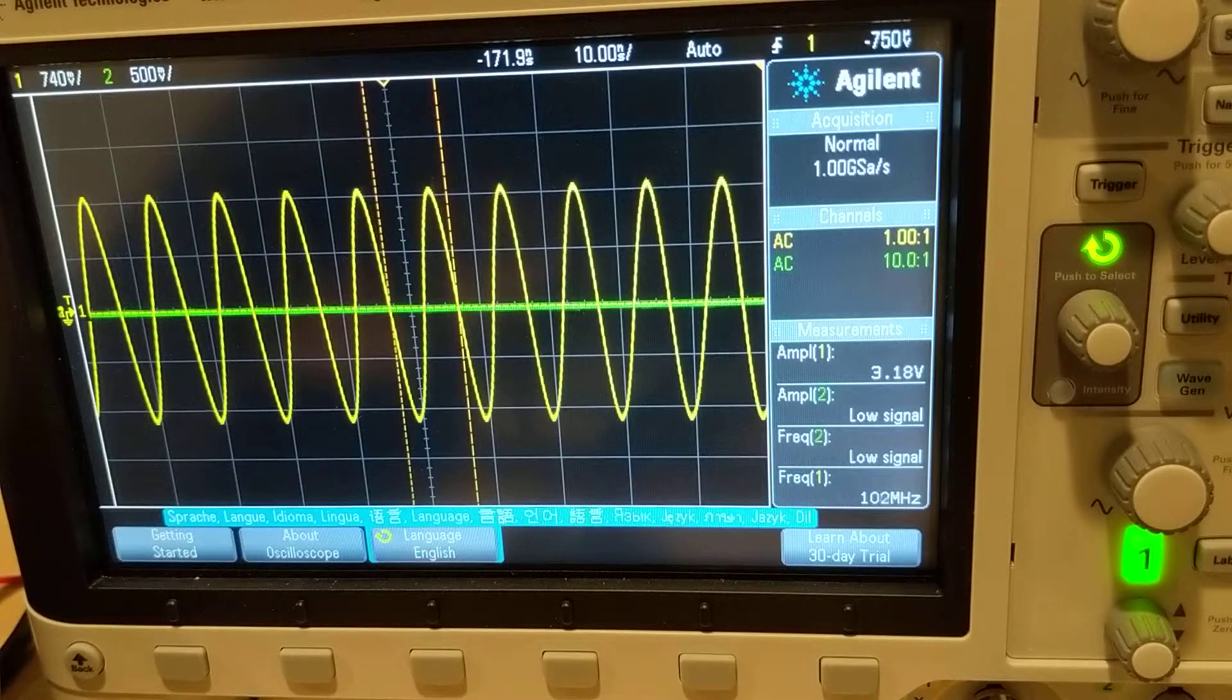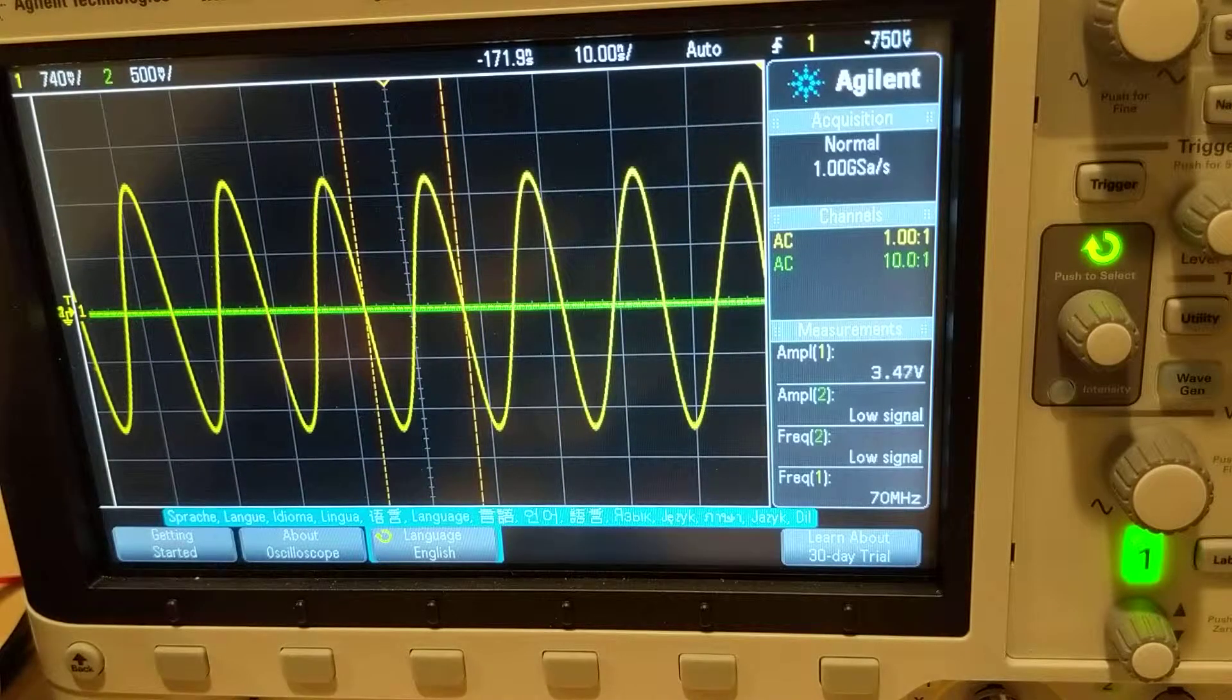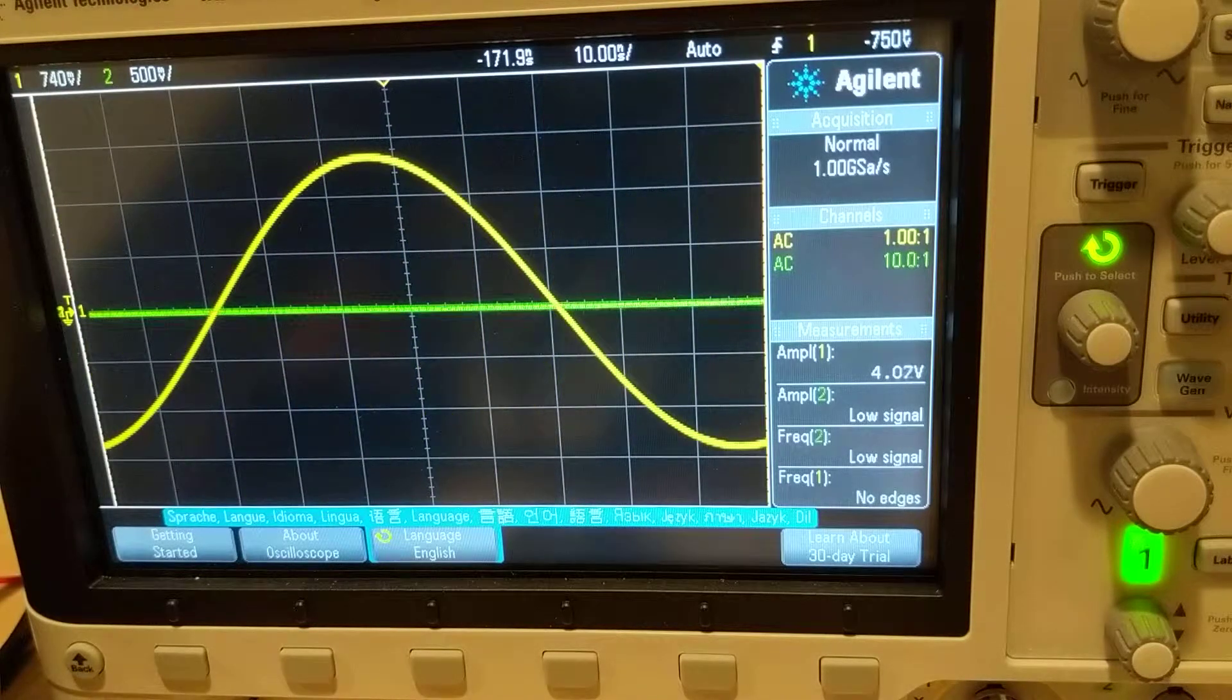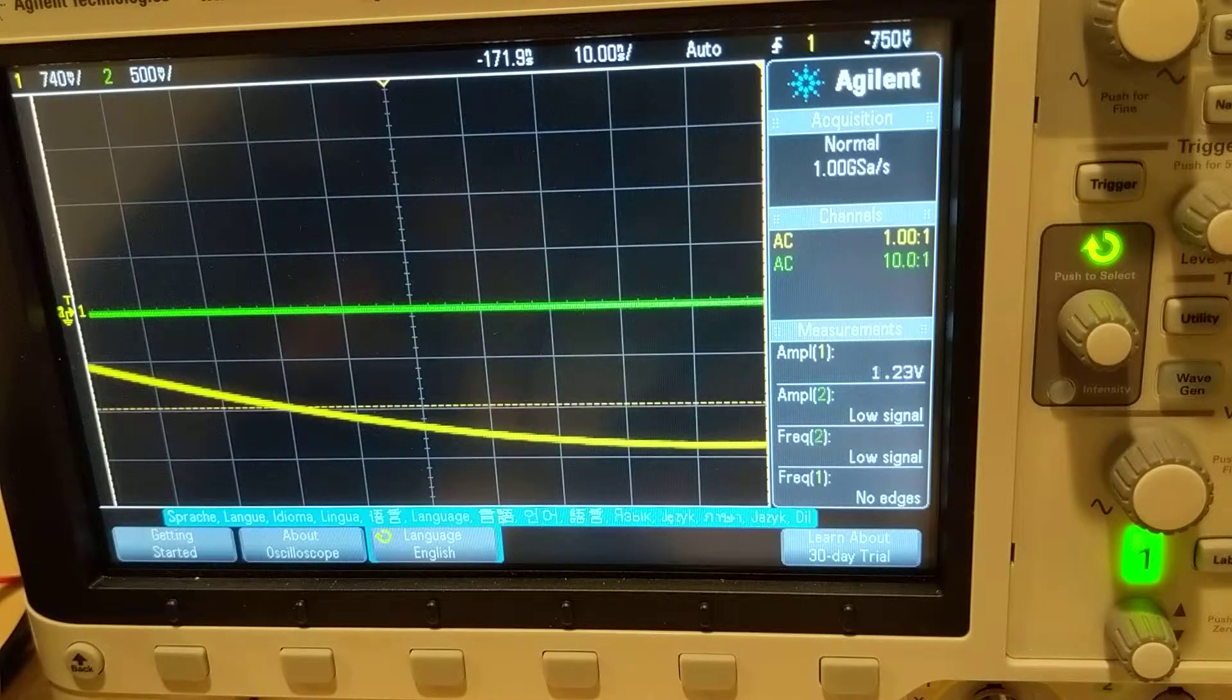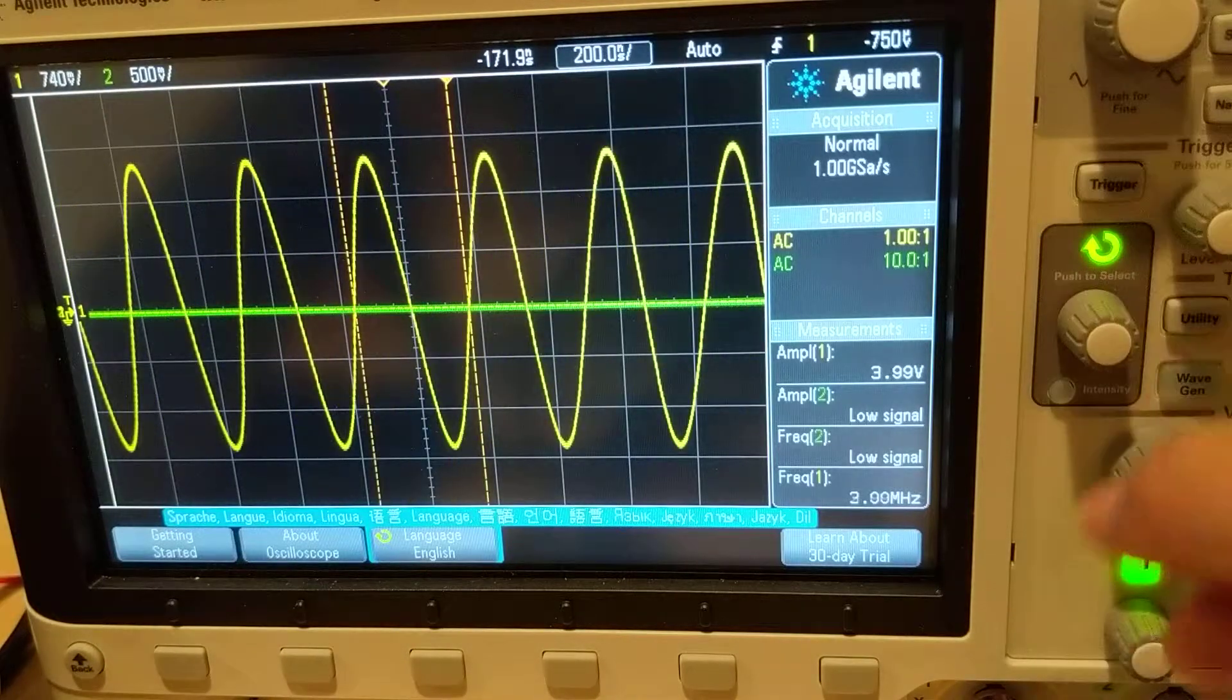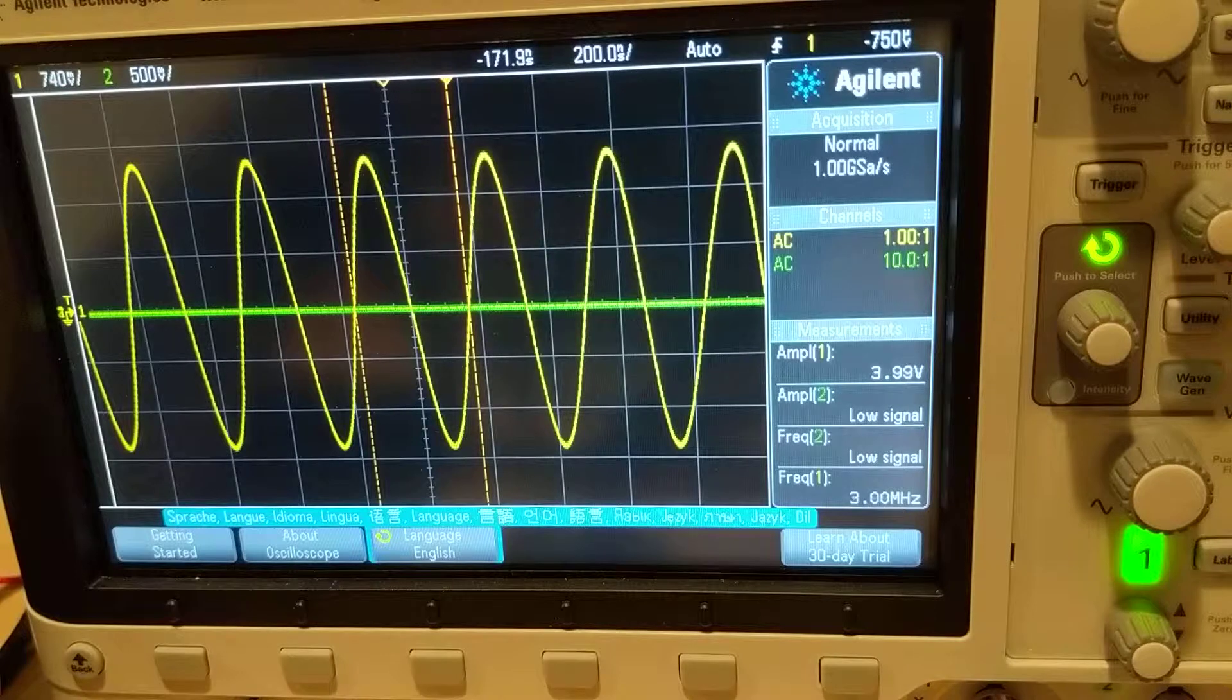For example, let's go back to the 80 meter band which is 3 megahertz. This 80 meter band has 3 megahertz and the voltage is back to 3.99.